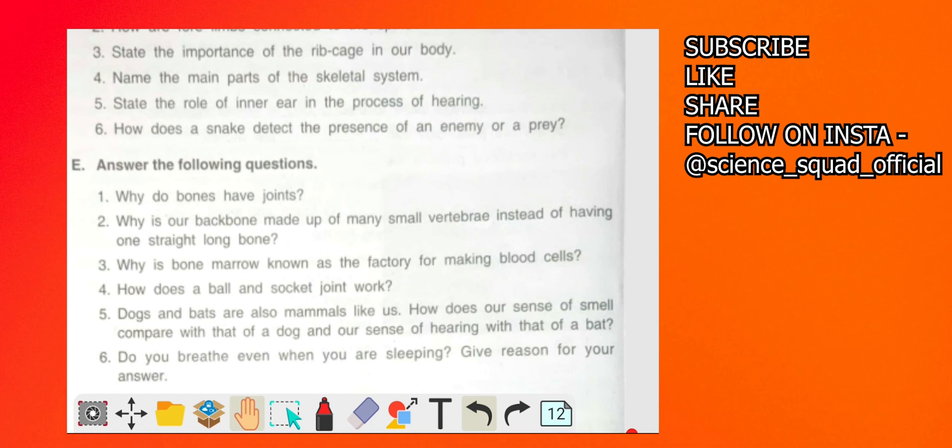How does a ball and socket joint work? Ball and socket joint has one bone which has hollows, which has socket like structure, and another bone which is fixed inside as a ball like structure.